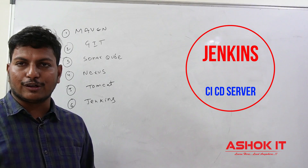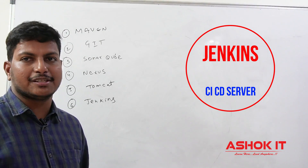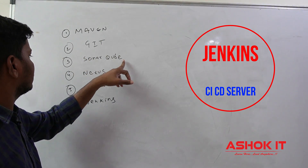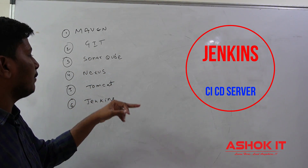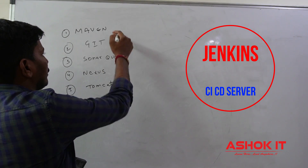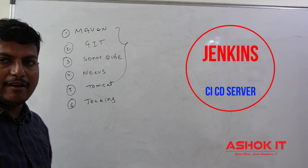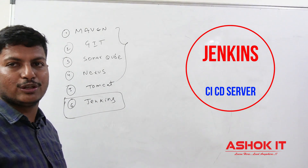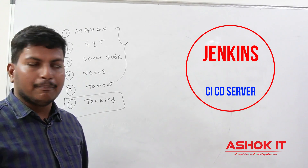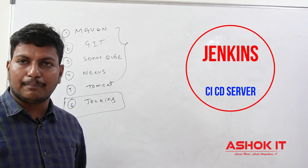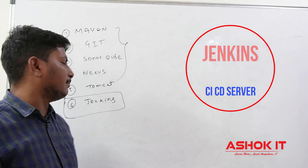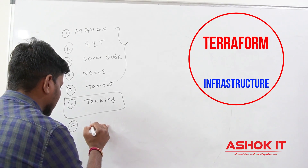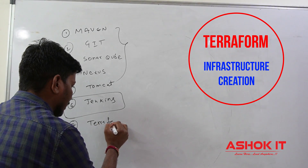Next is Jenkins. Jenkins is called as a CI/CD tool, which is used for continuous integration and continuous deployment. Whatever the build process, code review process, build artifact, and code deployment operations we are doing manually — everything can be automated by using Jenkins. Jenkins is the most important tool for every DevOps engineer. Build automation, project build, and deployment automation processes can be done by using Jenkins.